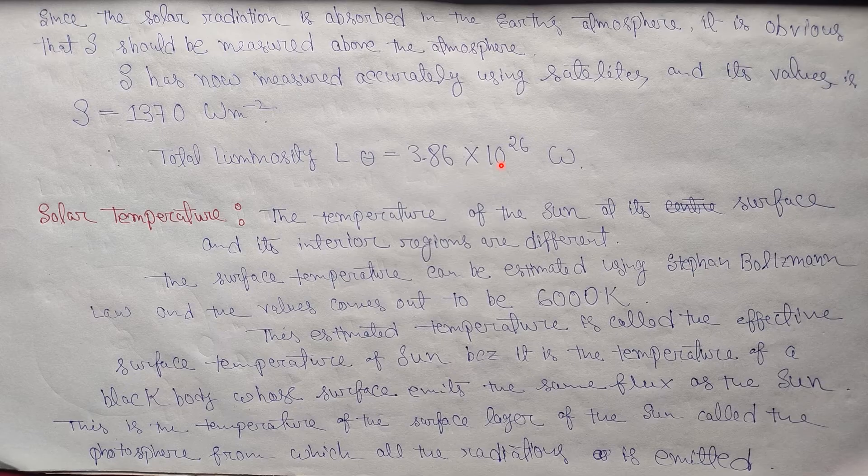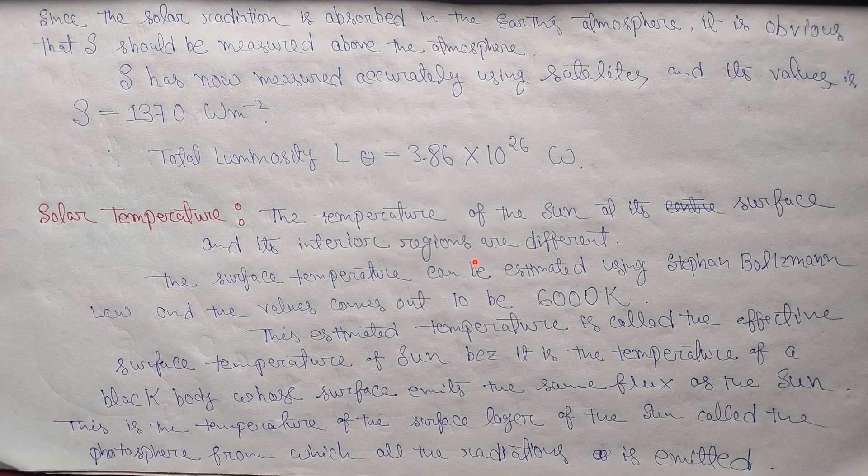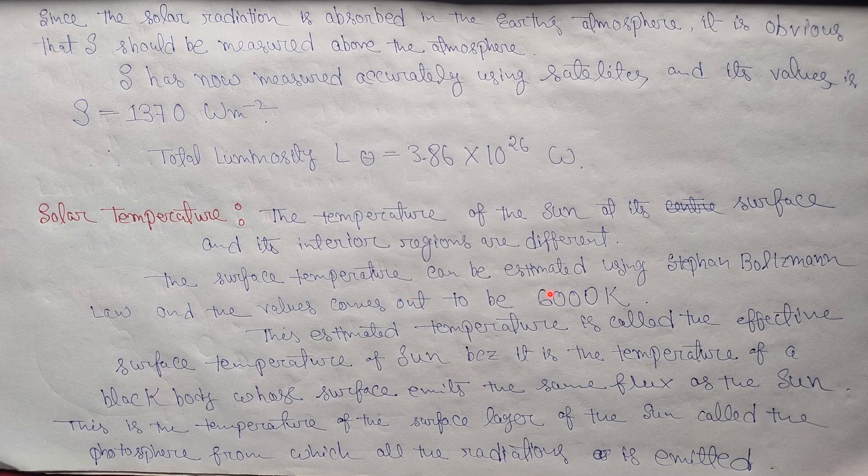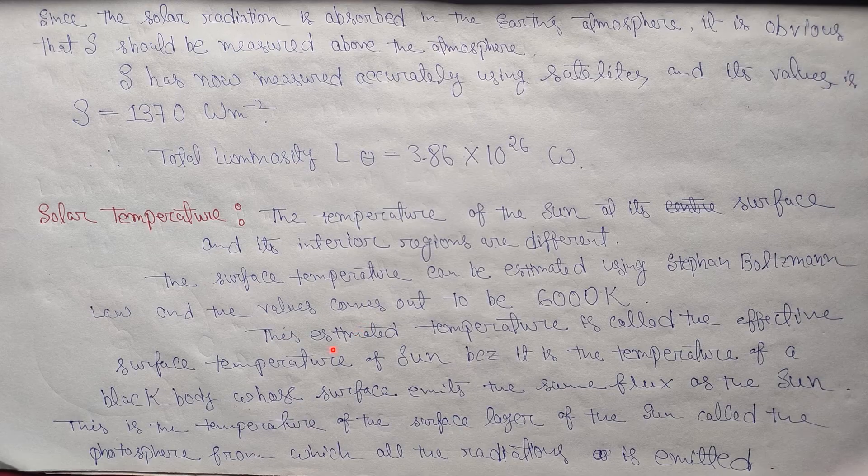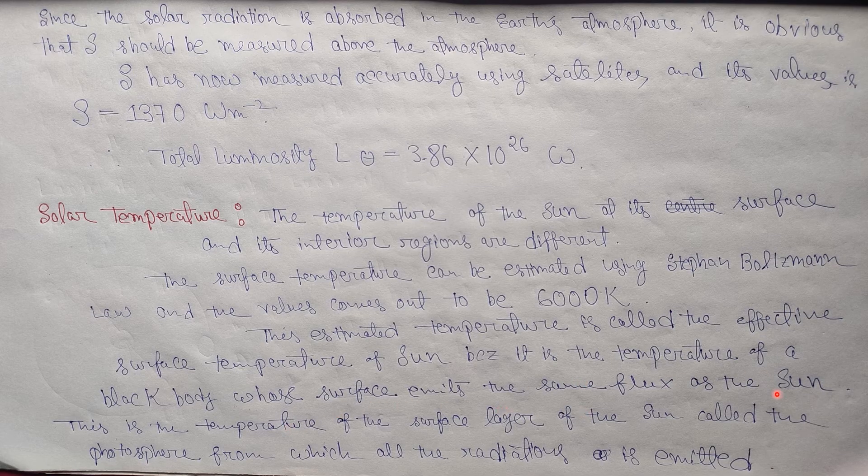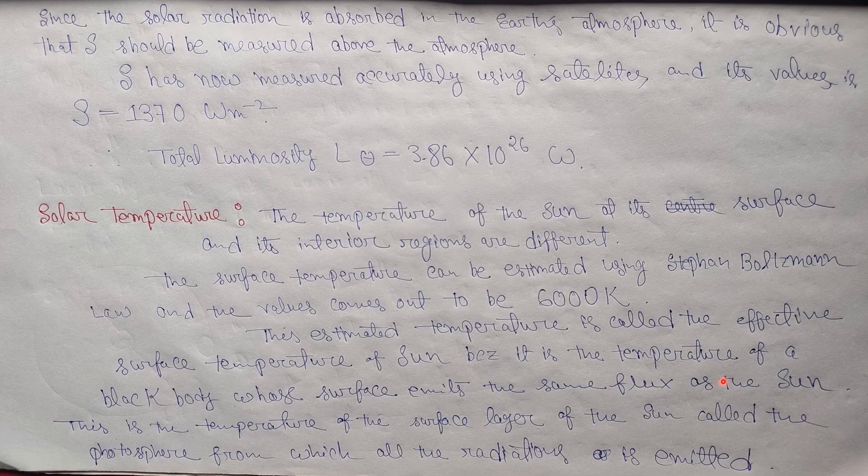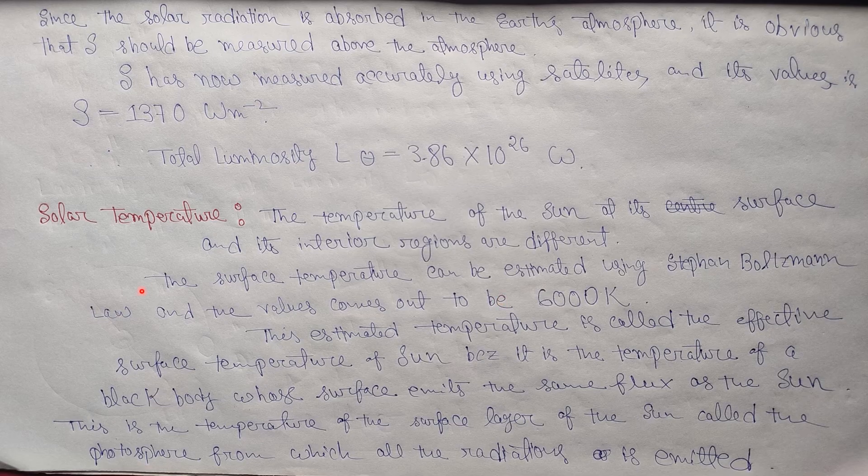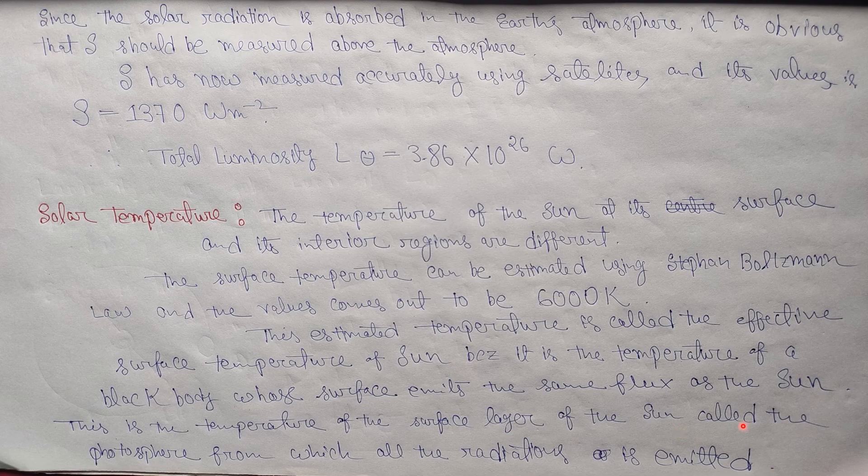Now what is solar temperature? So the temperature of the sun at its surface and its interior regions are quite different. The surface temperature can be estimated using Stefan-Boltzmann law and its value comes out to be 6000 Kelvin. This estimated temperature is called the effective surface temperature of our sun because it is the temperature of a black body whose surface emits the same flux as the sun. So basically here we consider our sun as a black body and then we use Stefan-Boltzmann's law and we get its surface temperature. So this is the temperature of the surface layer of our sun which is also known as the photosphere, from which all the radiations are emitted.